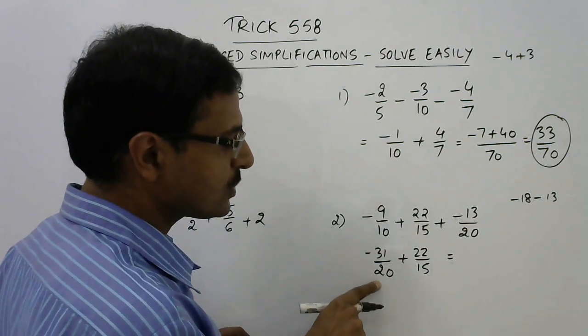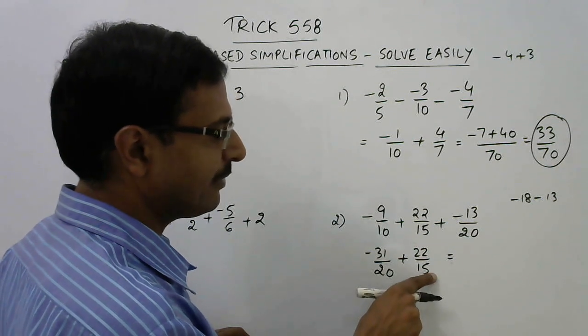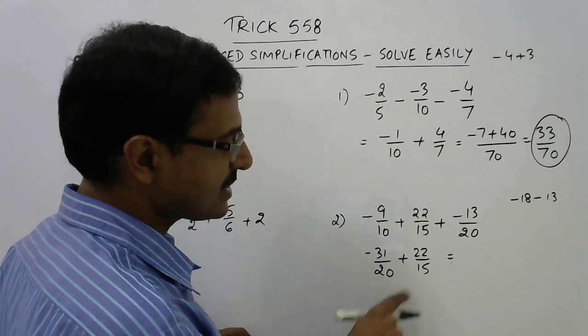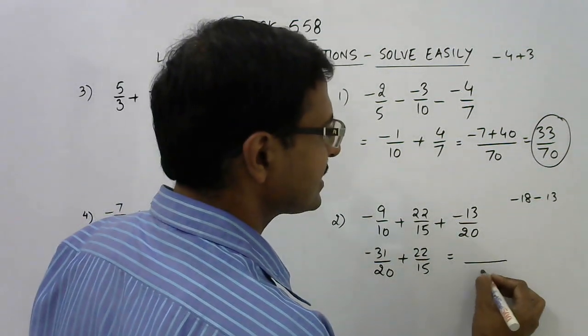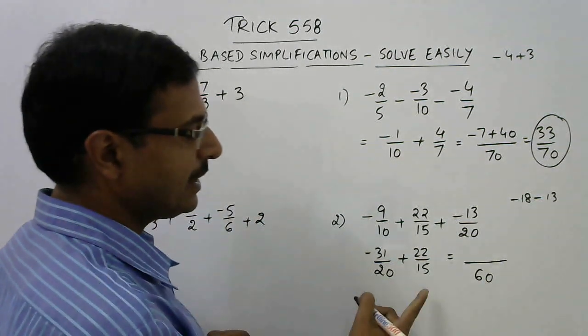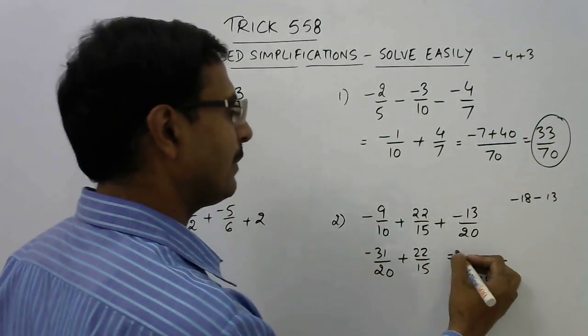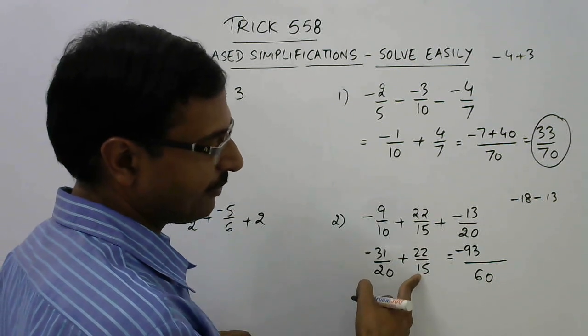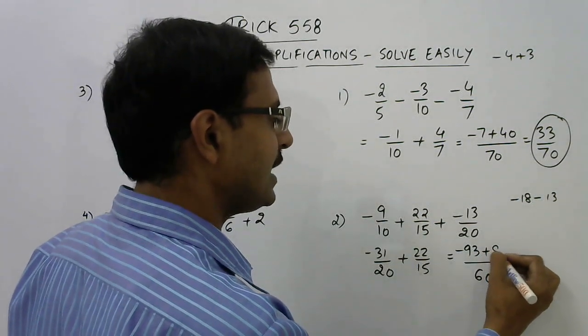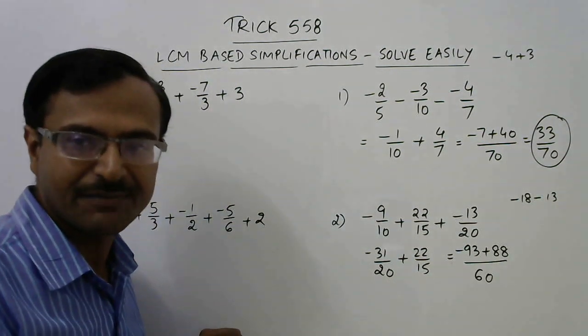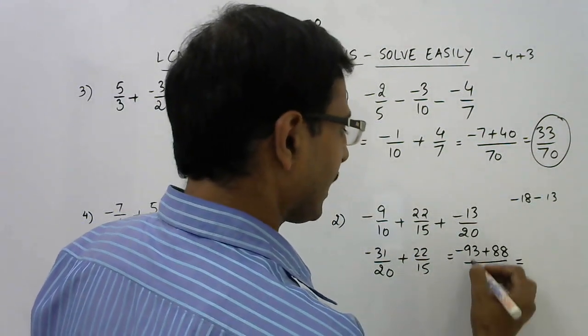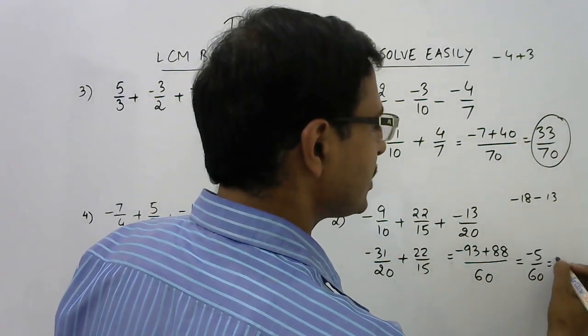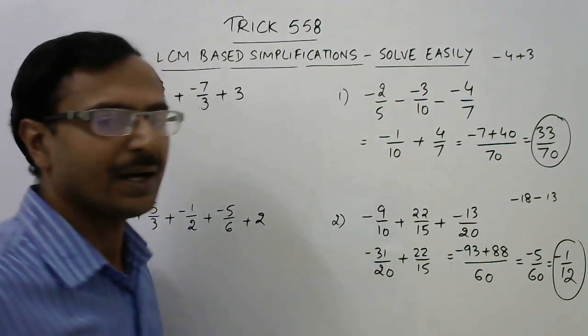Take multiples of 20, 22 is 40. 40 is not divisible by 15. 60 is divisible by 15, so 60 is the LCM. Finally, 60 divided by 23, multiply by 3 you get 93 and 16 divided by 15 is 4 that is plus 88. That gives the final answer for this question. It is minus 5 by 60 or you can cancel it to get minus 1 by 12 as the answer.